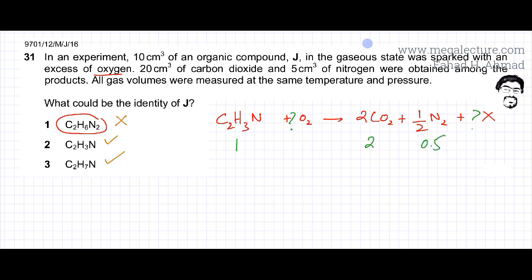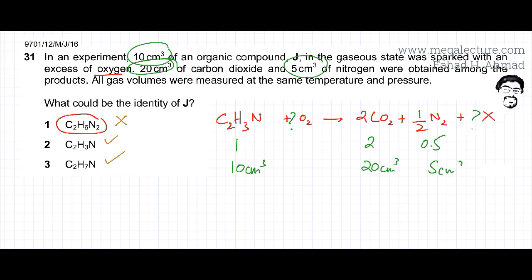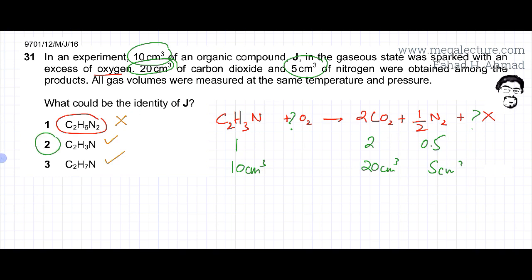The mole ratio from the incomplete equation is 1:2:0.5 for compound to CO₂ to N₂. The volume ratio is exactly the same: 10 cm³ produces 20 cm³ of carbon dioxide and 5 cm³ of nitrogen. The ratio fits perfectly — one molecule produces 2 CO₂ and 0.5 N₂, so option number 2 is definitely correct.